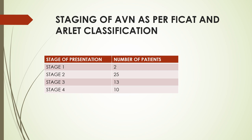Staging of AVN as per FICAT and ARLET classification: patients presented in stage 1 were 2, in stage 2 were 25, in stage 3 were 13, and in stage 4 were 10. So most of the patients presented in stage 2 and 3.